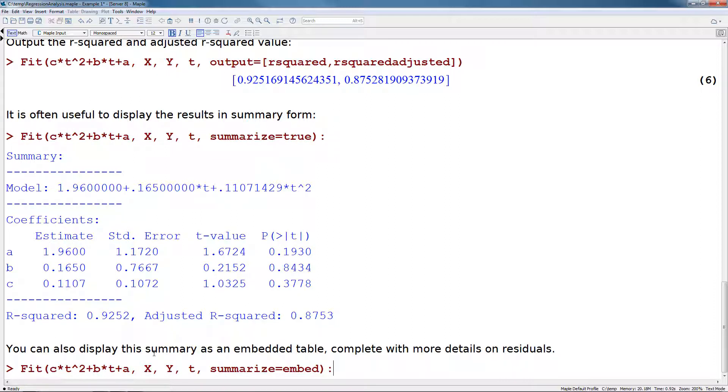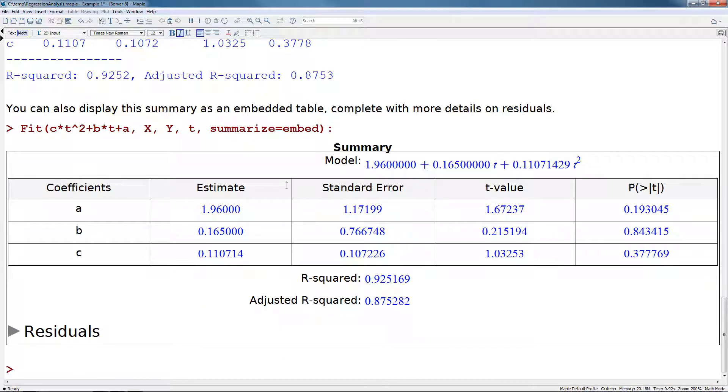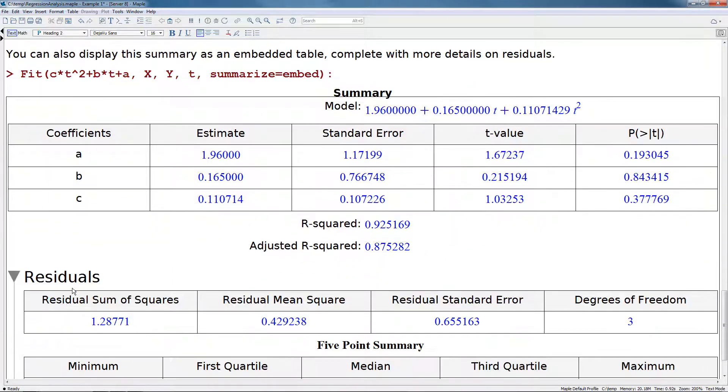You can also display the summary as an embedded table, complete with more details on residuals. To do so, add in the summarize equals embed option to the fit command. This will give you back a pretty printed table, which includes the same information as the printed summary above. However, it will also add in information on the residuals.